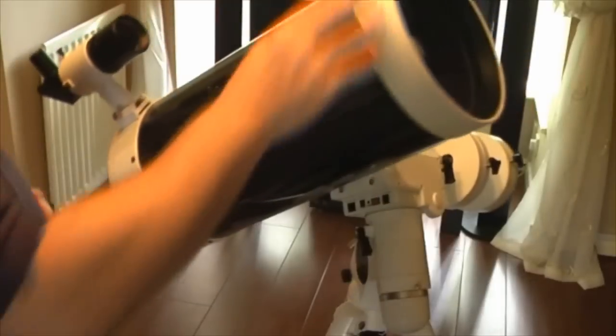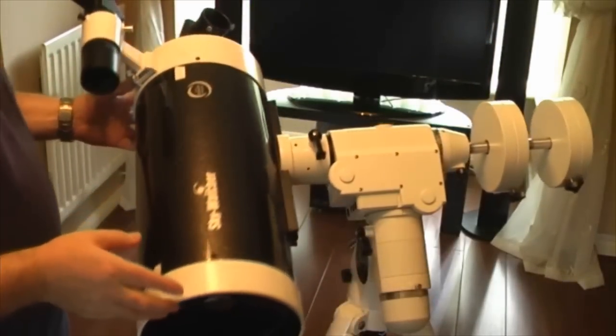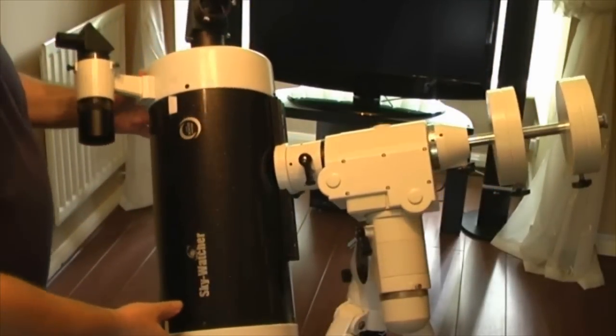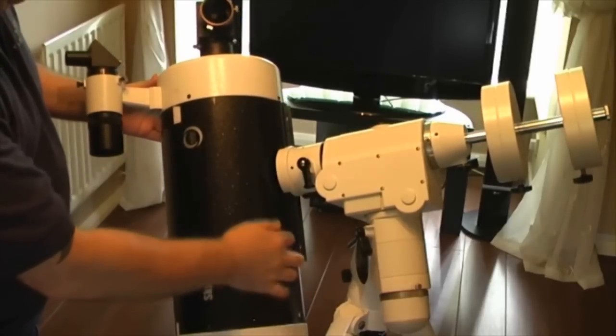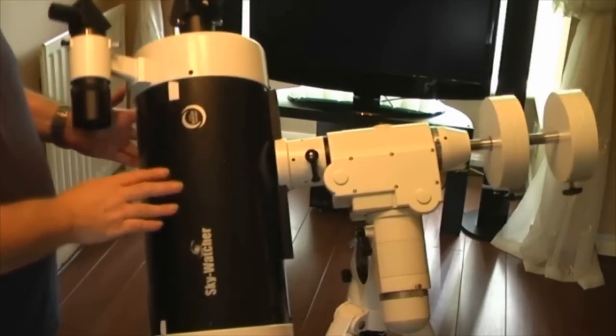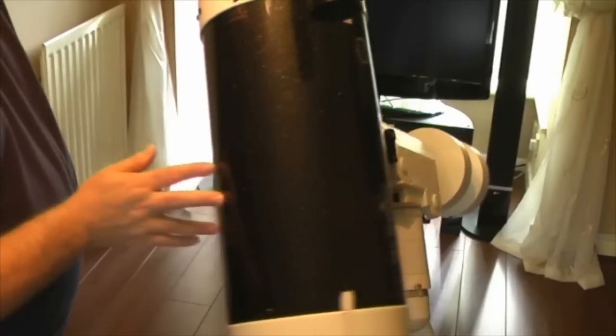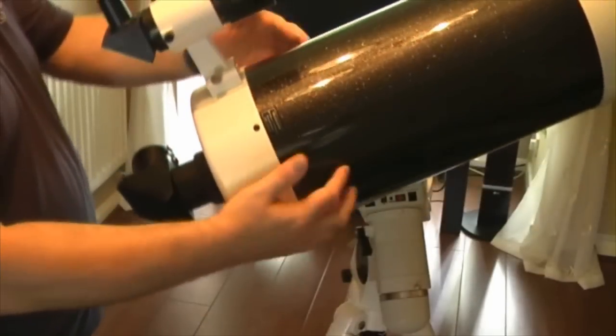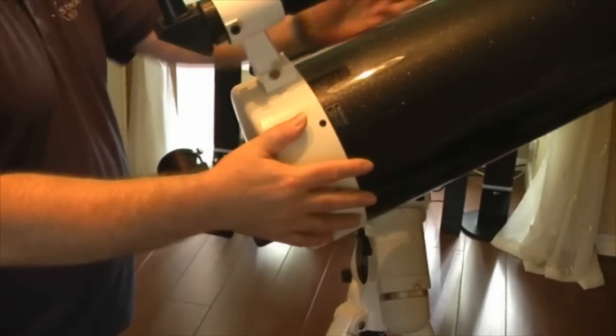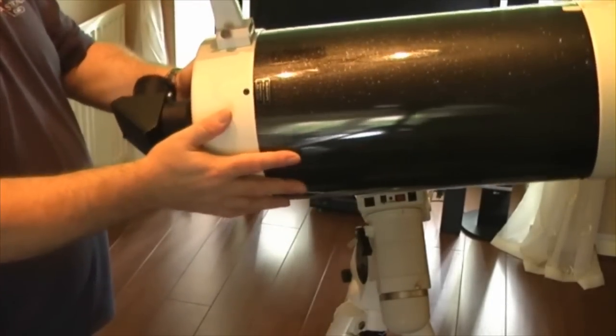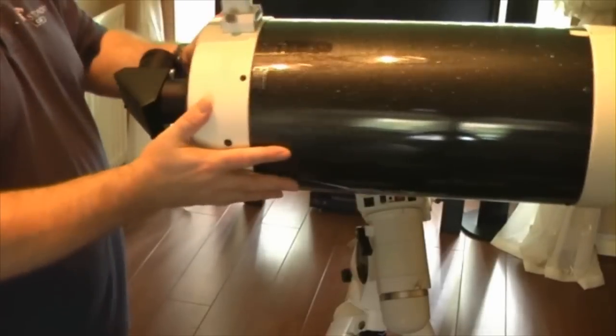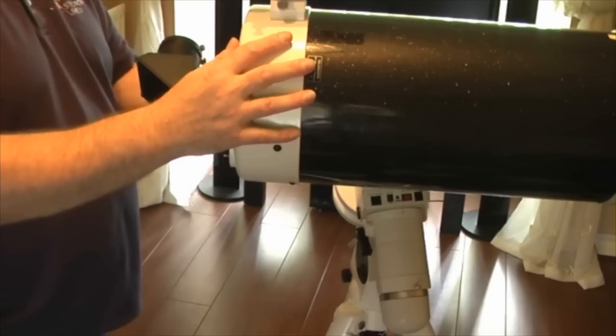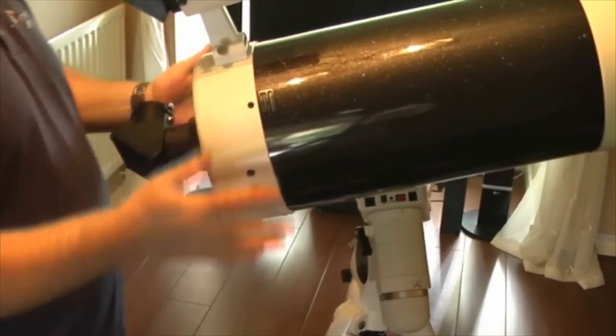The second thing that is a niggle more than anything else, it's just something I don't like, is that the Mac is fixed to the mount by having a Vixen style dovetail that's bolted directly to the tube and I don't like it to be honest. Not in a bigger scope, I'd much rather see rings on the 180. I mean it's fine on the smaller Macs but this is quite a heavy scope and I just don't think it's solid enough just to be able to have two bolts fixing a dovetail through a piece of thin steel tube.